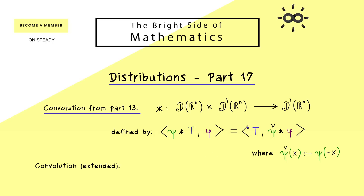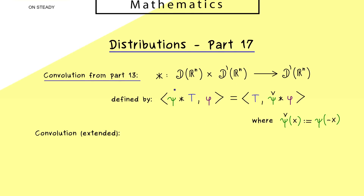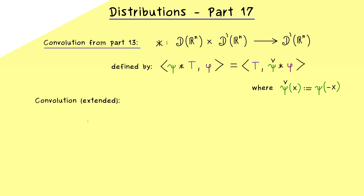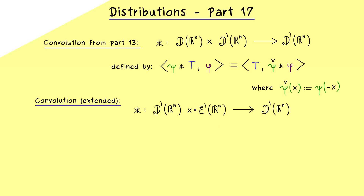Now the question is: can we extend this definition such that we can put in two distributions without regularity? This is exactly what we will do today. We will extend the definition such that the convolution is defined for two distributions. The first entry can be any distribution, but we will weaken the second entry — we will only allow distributions with compact support, denoted by E'. The outcome of this convolution is still a general distribution in D'. Having one distribution with compact support makes the whole convolution possible, and even that can be extended further in a different video.